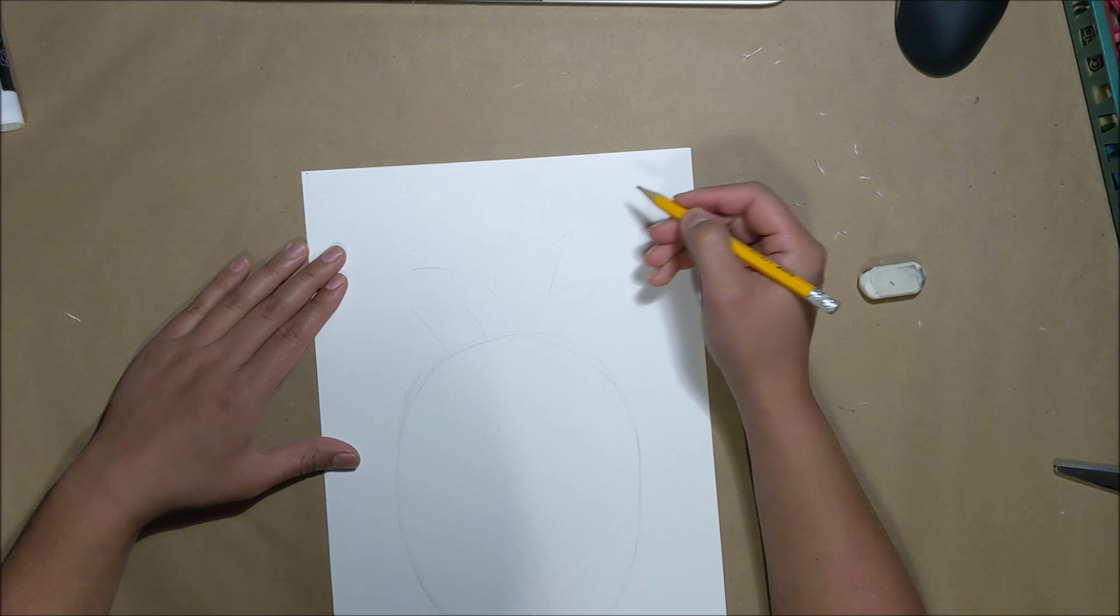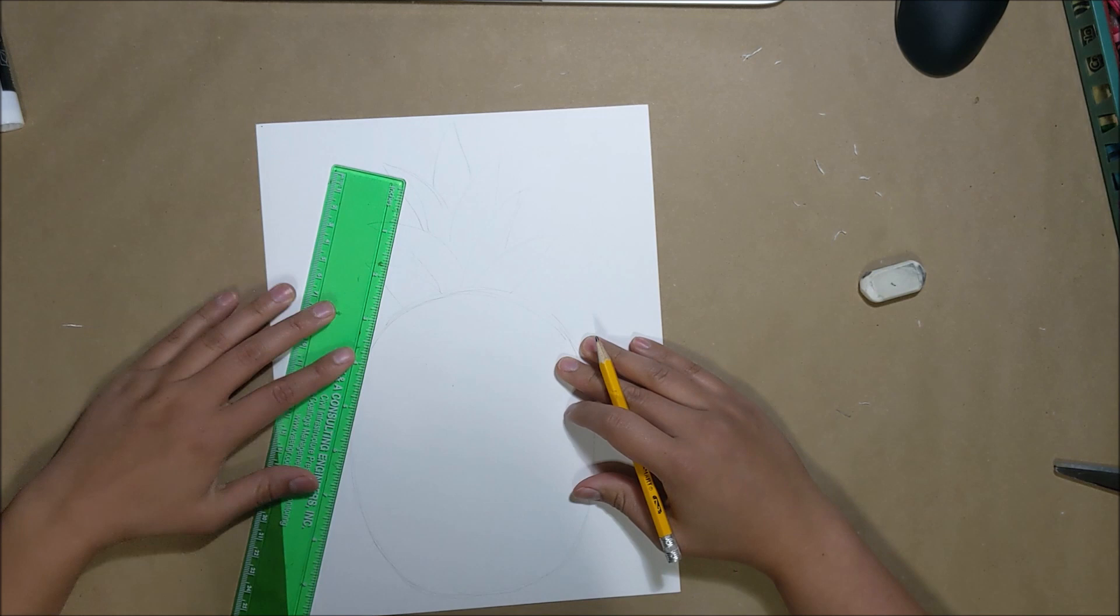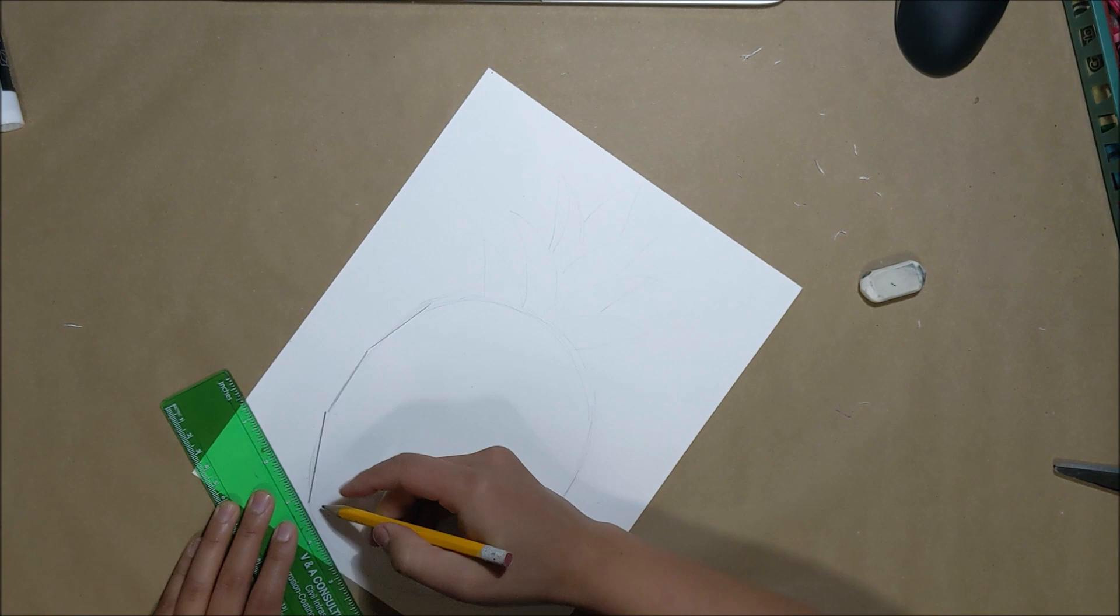Taking a ruler, we're going to create straight edges all around the base of the pineapple. Our round pineapple base will now have edges and very slight corners.